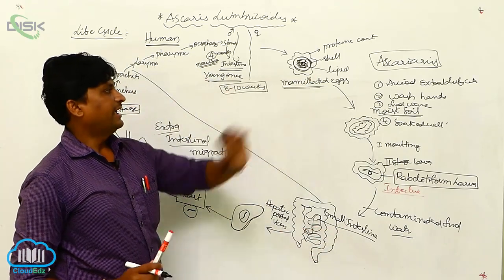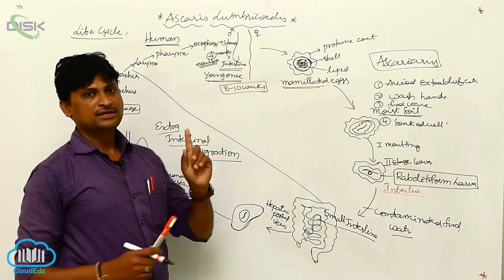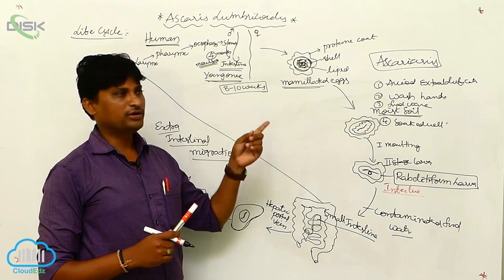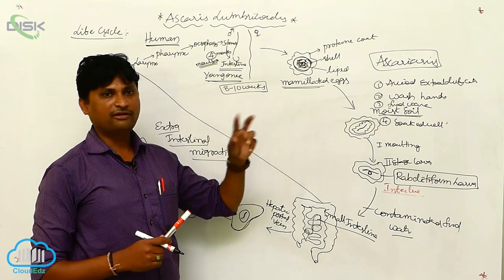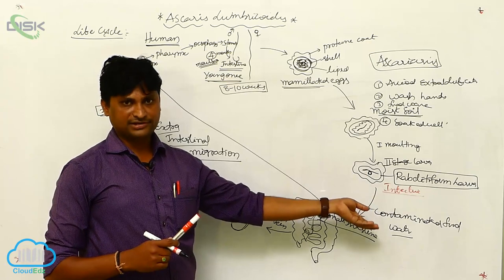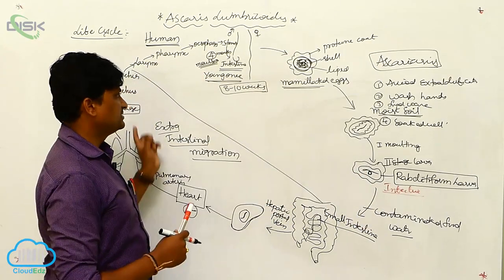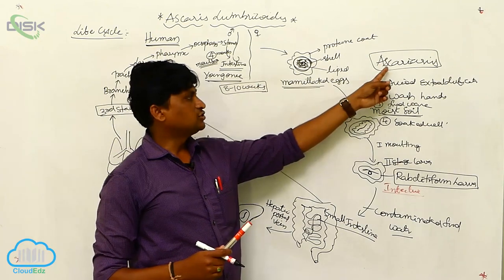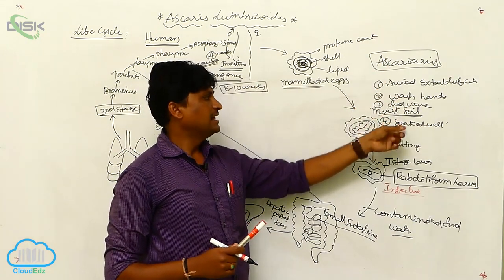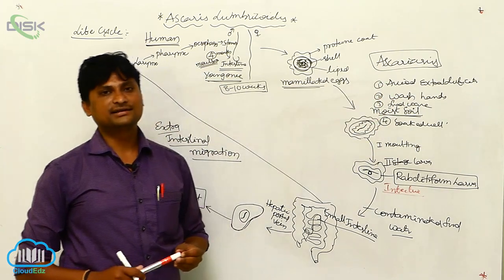In overview, Ascaris lumbricoides has a cosmopolitan distribution. It is a monogenic parasite with distinct male and female forms. The life cycle causes ascariasis disease, and these prophylactic measures are important for controlling Ascaris infection.